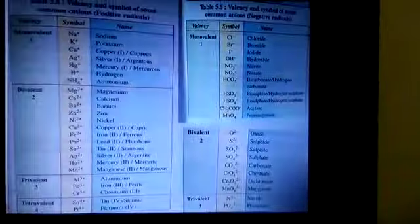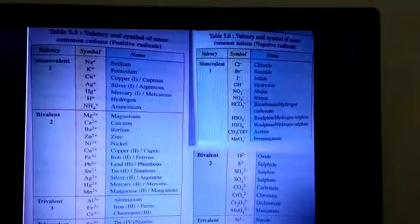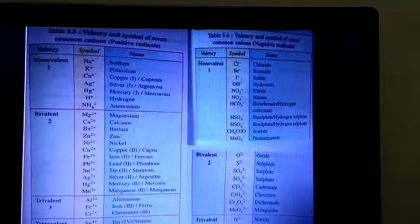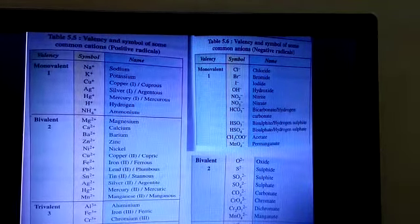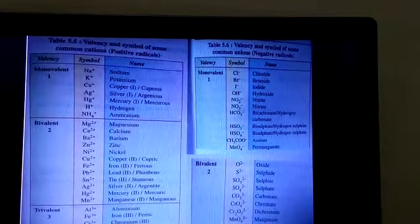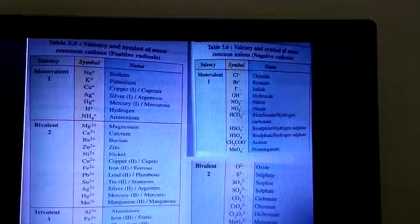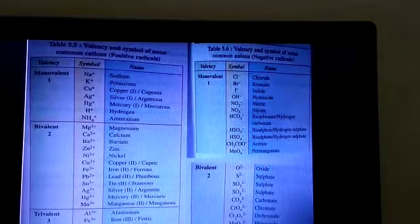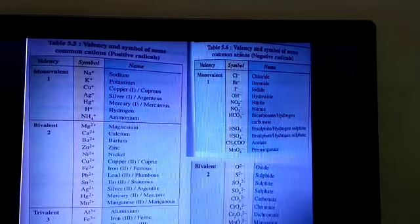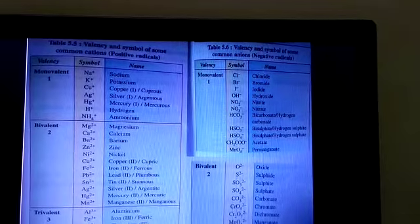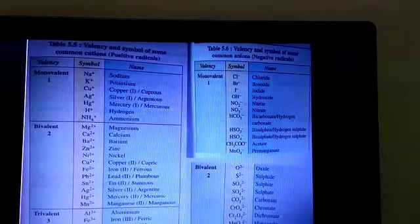Now see in this table. You can see here the valency and symbols of some common cations, means positive radicals are here. That can be monovalent, means only one charge, only +1 charge: Na+, K+, Cu+. And bivalent means they contain two plus charges: Mg2+, Ca2+, Zn2+, Cu2+, Ni2+. And for trivalent it will be +3 charge: Al3+ for aluminium, Fe3+ for ferric, and Cr3+ for chromium. Same for tetravalent, that is when they contain four plus charges.